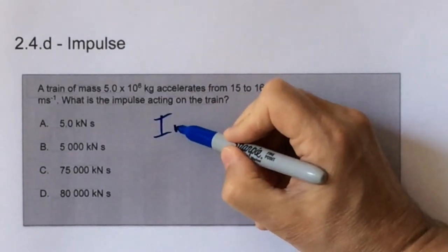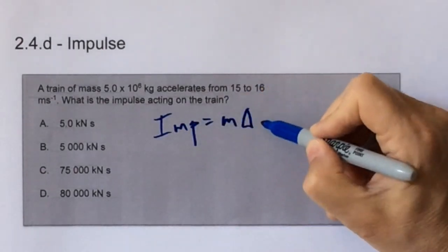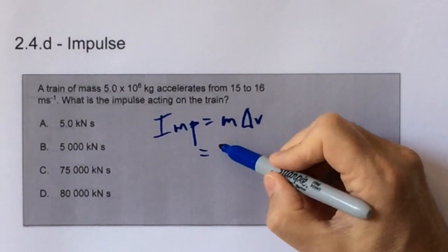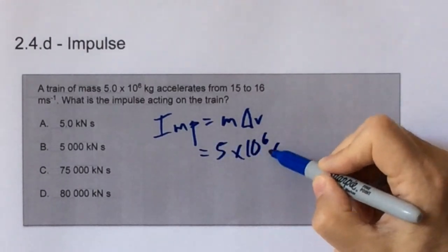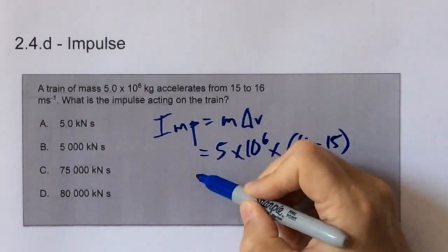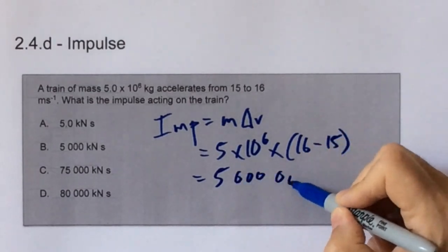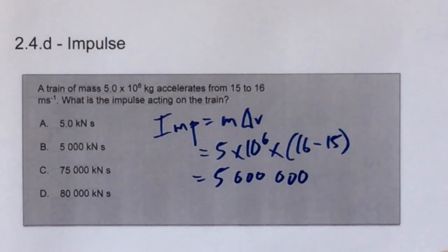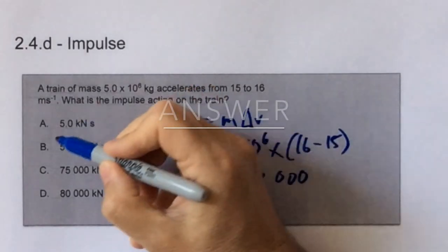Impulse is change in momentum, which is mass times change in velocity. We substitute in the numbers we know, 5 times 10 to the 6, and the change in velocity is just 1. So the answer is 5 million. Newton seconds is the unit of impulse, and here we're looking at kilonewton seconds, and therefore the answer is 5000 kilonewton seconds b.